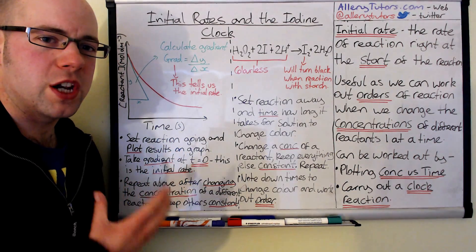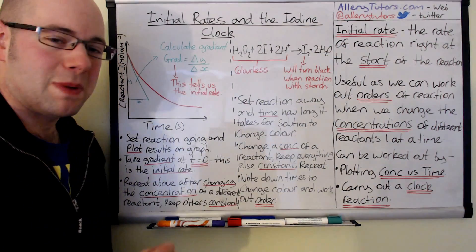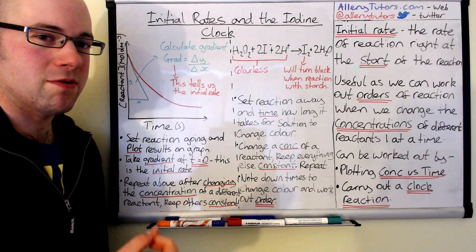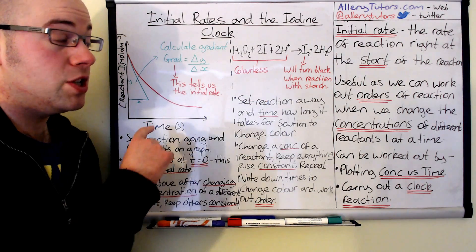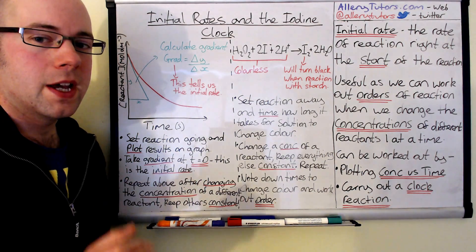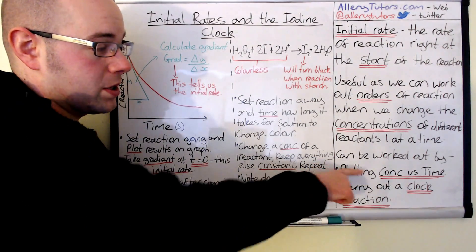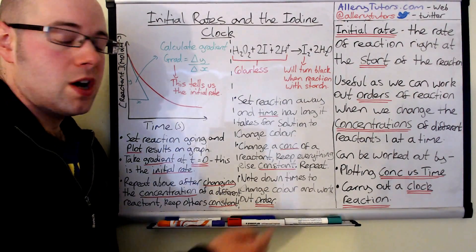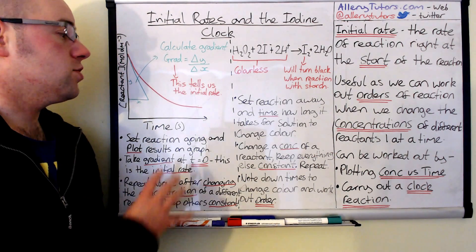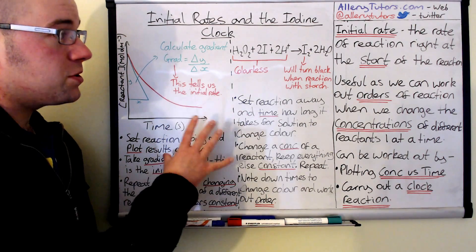We're going to start by looking at what initial rate actually means first. Initial rate of reaction is basically the rate of the reaction right at the start, so this would be at time zero effectively. We can use this because it's really useful - we can use it to work out the order of reactions and we can compare them by plotting a concentration versus time graph or we can carry out a clock reaction.